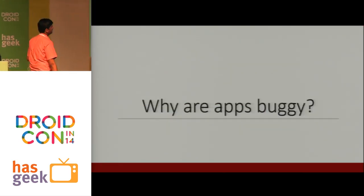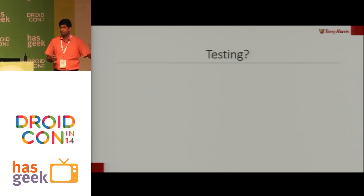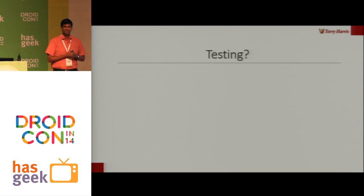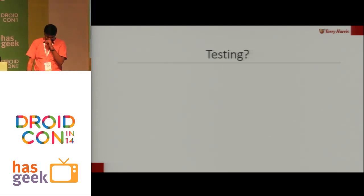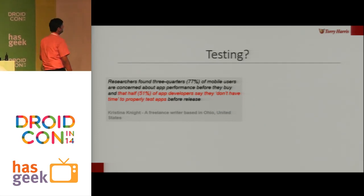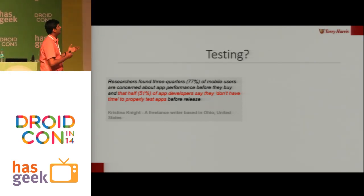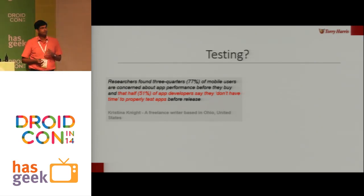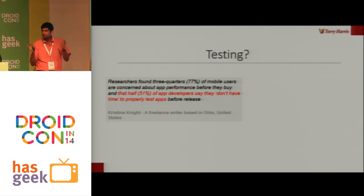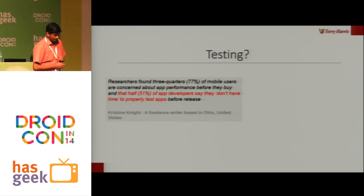Let's look at why apps are buggy. How many of you test your apps before they go live? That's a bit scary. A researcher called Christina Knight found that 77% of mobile users are worried about the performance and quality of their app before they buy it. Notice the point in red: 51% of app developers say that they don't have time to properly test their apps before release. Another survey by top software companies like HP and Capgemini found that only 31% of organizations actually test their mobile apps. That's again scary.